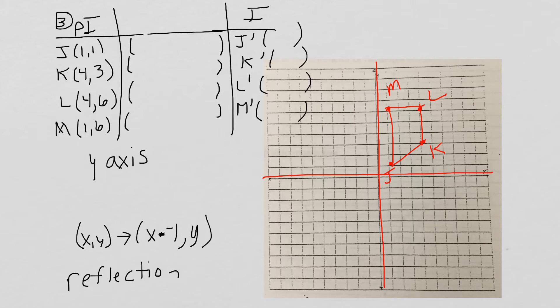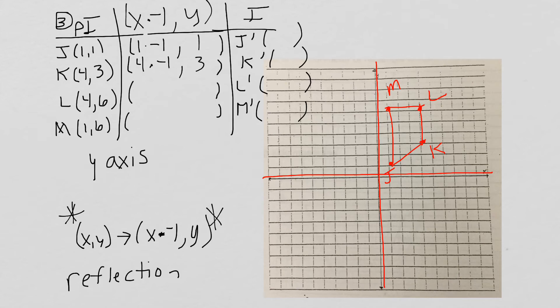Let's take a look at number 3. We have a quadrilateral; we've put in the ordered pairs for the PI and graphed our pre-image. Now we're reflecting over the Y-axis. Our algebraic expression is x times negative 1, and Y stays the same. So we compute 1 times negative 1 then 1; 4 times negative 1 then 3; 4 times negative 1 then 6; and 1 times negative 1 then 6. Our new ordered pairs are negative 1, 1; negative 4, 3; negative 4, 6; and negative 1, 6.